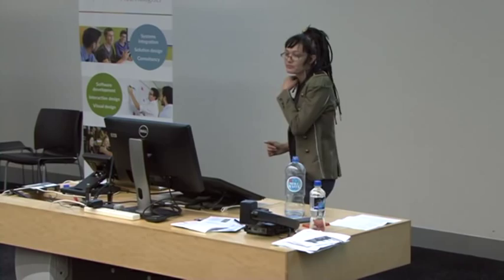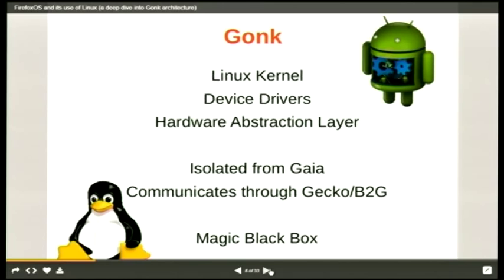Gonk is the Linux kernel layer. It holds device drivers, it holds a HAL, it's isolated from Gaia, and communicates through Gecko and B2G. You could call it, in a sense, a magic black box. It's isolated from the higher levels and all communication goes through web APIs. It's a core component that is adapted for differing chipsets, so each device will pretty much have its own version of Gonk rolled onto it.